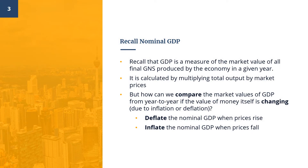Recall that GDP is a measure of the market value of all final goods and services produced by the economy in a given year. It is calculated by multiplying total output by market prices. But how can we compare the market values of GDP from year to year if the value of money itself is changing, perhaps due to inflation or deflation? The way to go about this problem is to deflate the nominal GDP when prices rise, and to inflate the nominal GDP when prices fall.